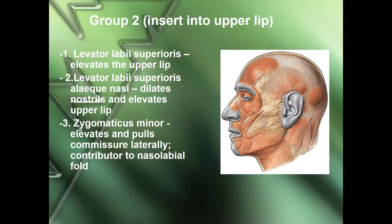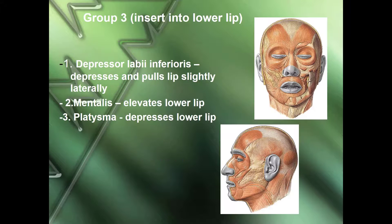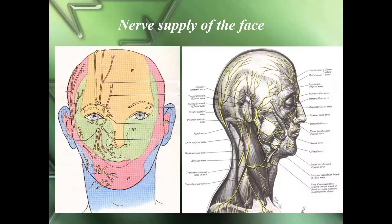Lip muscles group two includes those inserted into the upper lip: levator labii superioris, levator labii superioris alaeque nasi, and zygomaticus minor, which is small and less important. Group three includes muscles inserted into the lower lip: depressor labii inferioris, mentalis, and platysma — platysma depresses the lower lip. The most important from group three is the platysma.